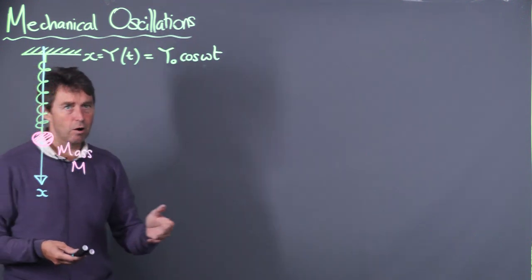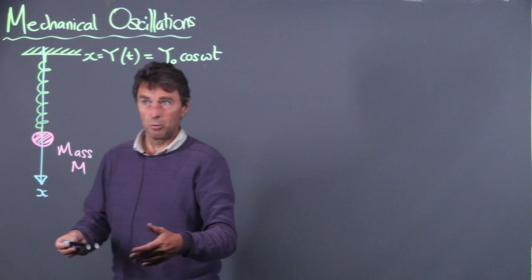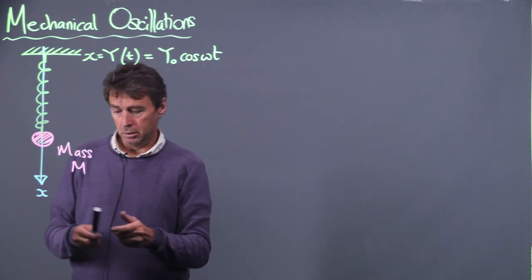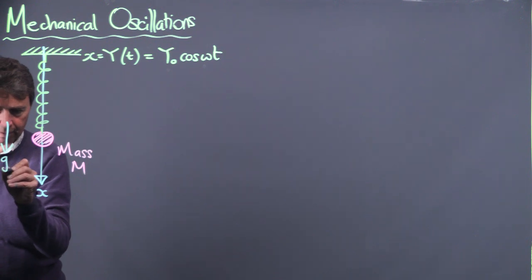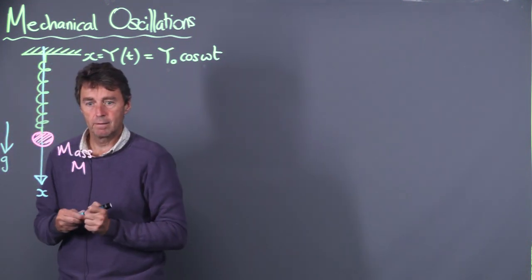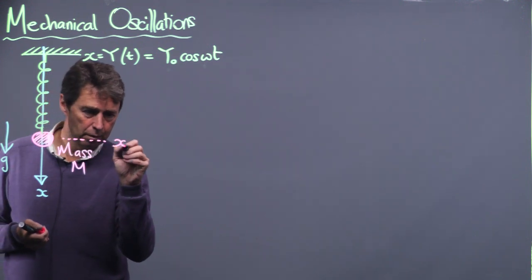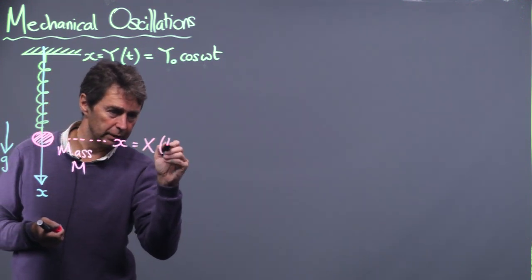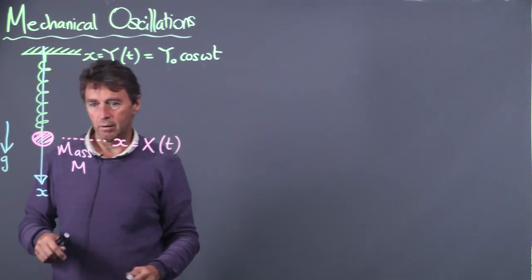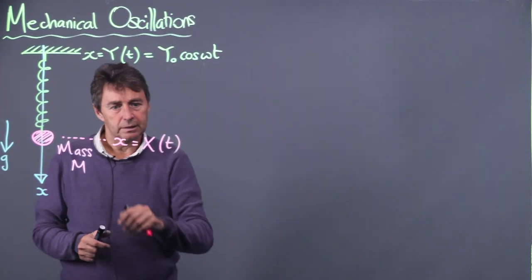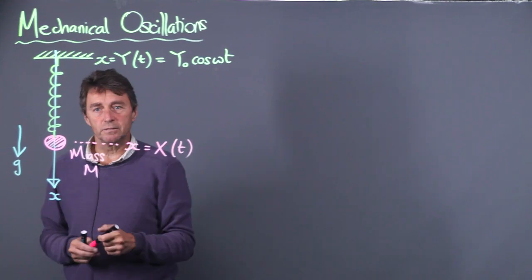We are heading towards a mechanical problem, so we're going to be using Newton's law. There are a number of forces acting — gravity is acting down. The position of the mass, let's call that X(t). X is measured downward; X(t) is the position of the mass, and Y(t) is the position of the stage.